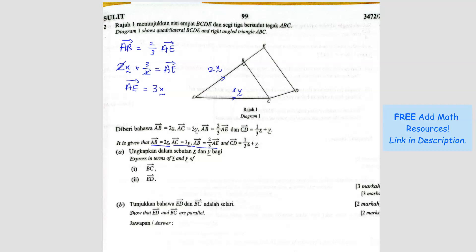So AE to E, the whole thing, I mean this whole thing here, is 3X. So that means the remaining BE will be just X. Because the whole thing is 3X, here is 2X, so this one must be X.